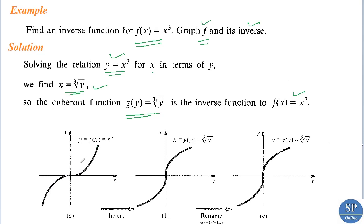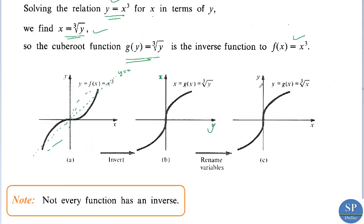To find the graph of the inverse function, we have to flip this graph with respect to the line y equal to x. Flipping this curve with respect to y equal to x, we get this graph. Here we have y and x. If we interchange or rename the variables, taking this as x and this as y, we get the function y equal to cube root of x.